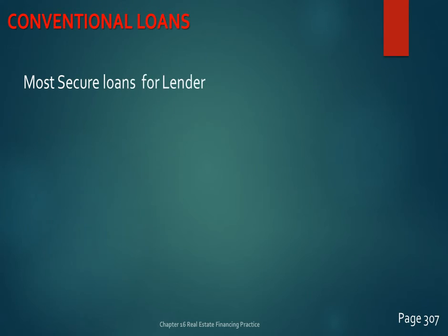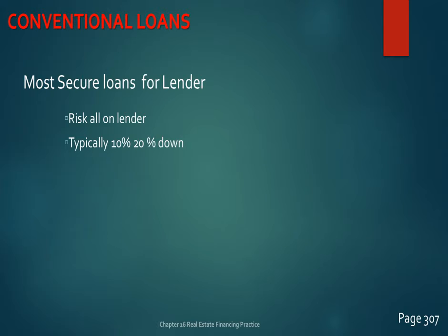Conventional loans generally require 20% down and are the most secure loan for lending institutions, because the lender must meet front-end and back-end ratios to confirm the borrower's ability to repay. The 28% front-end ratio is the housing ratio — no more than 28% of your monthly income should go to housing (principal, interest, taxes, and insurance). The back-end ratio is 36% — no more than 36% of monthly income should go to all debt. If you fall within both ratios, the loan should be affordable.